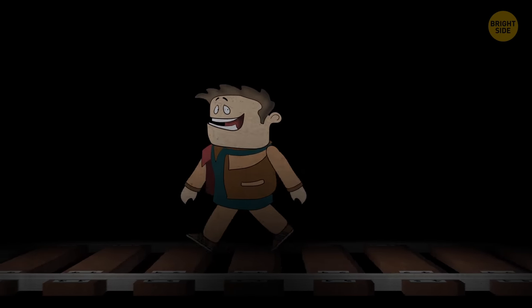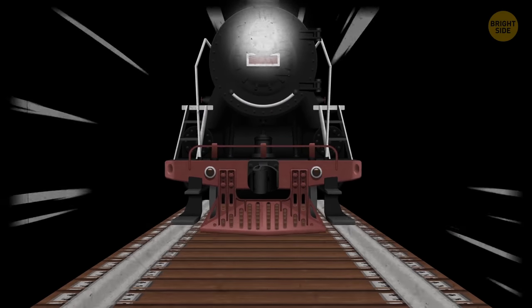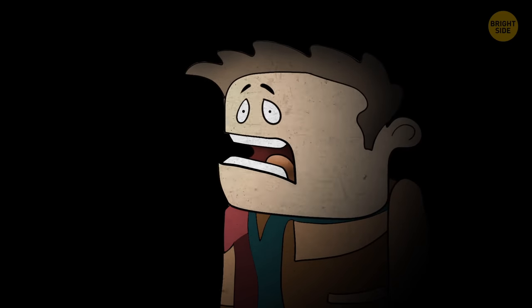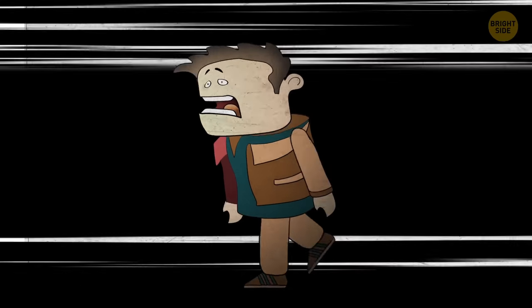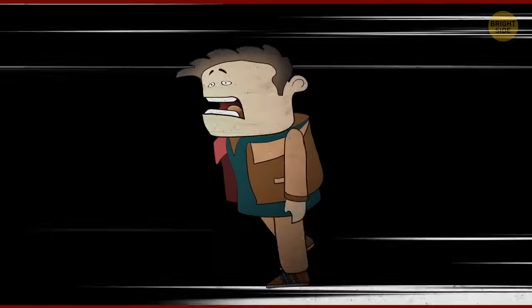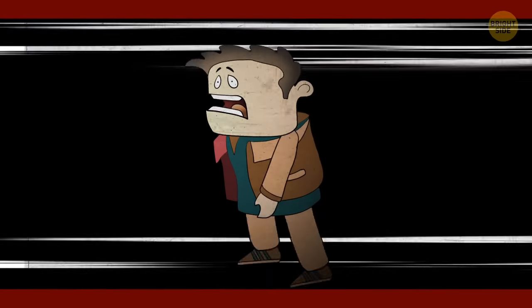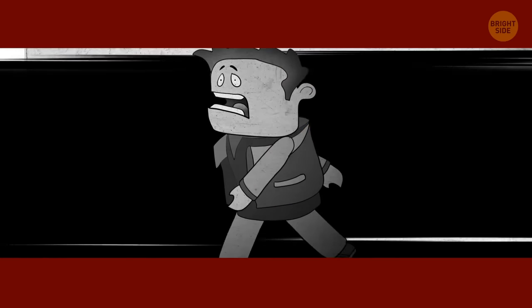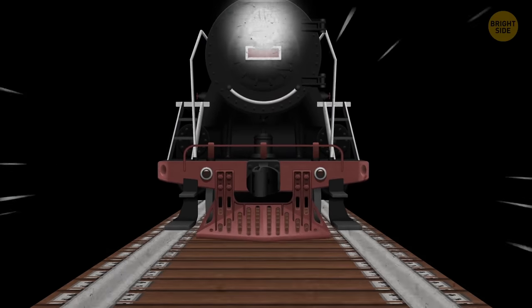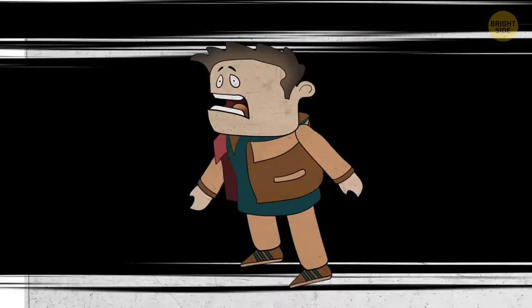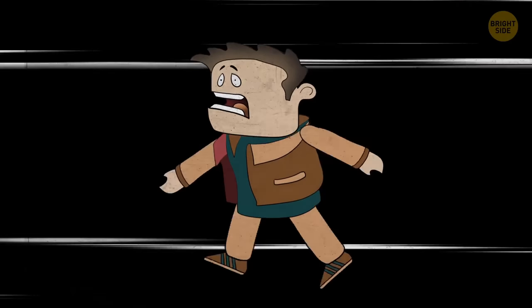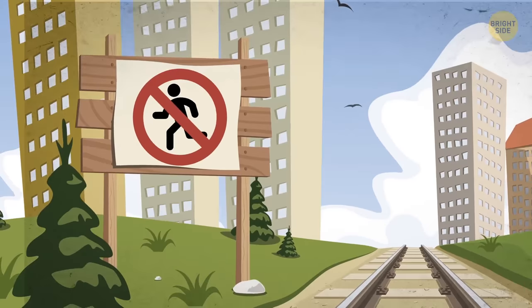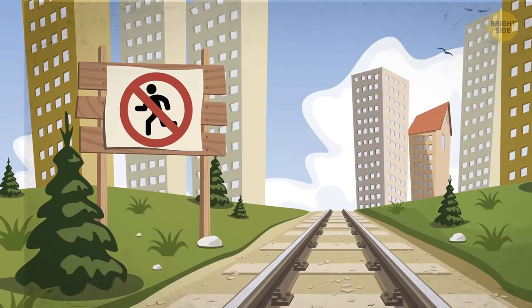Will was walking on railroad tracks when he saw a train coming right at him at full speed. As soon as he spotted it, he ran toward the train to survive. Why did he do that? He was in a tunnel. The only way to get to safety was running toward the train out of the tunnel and then jumping out to the side. The takeaway here, don't be walking on train tracks at all.